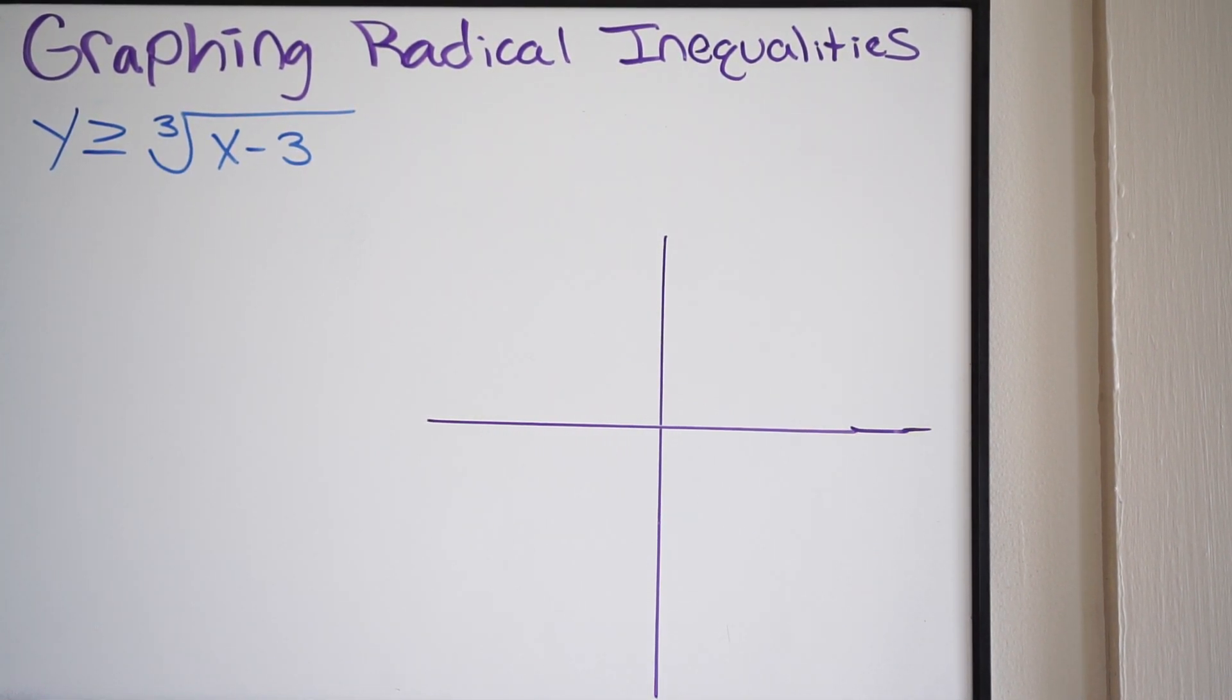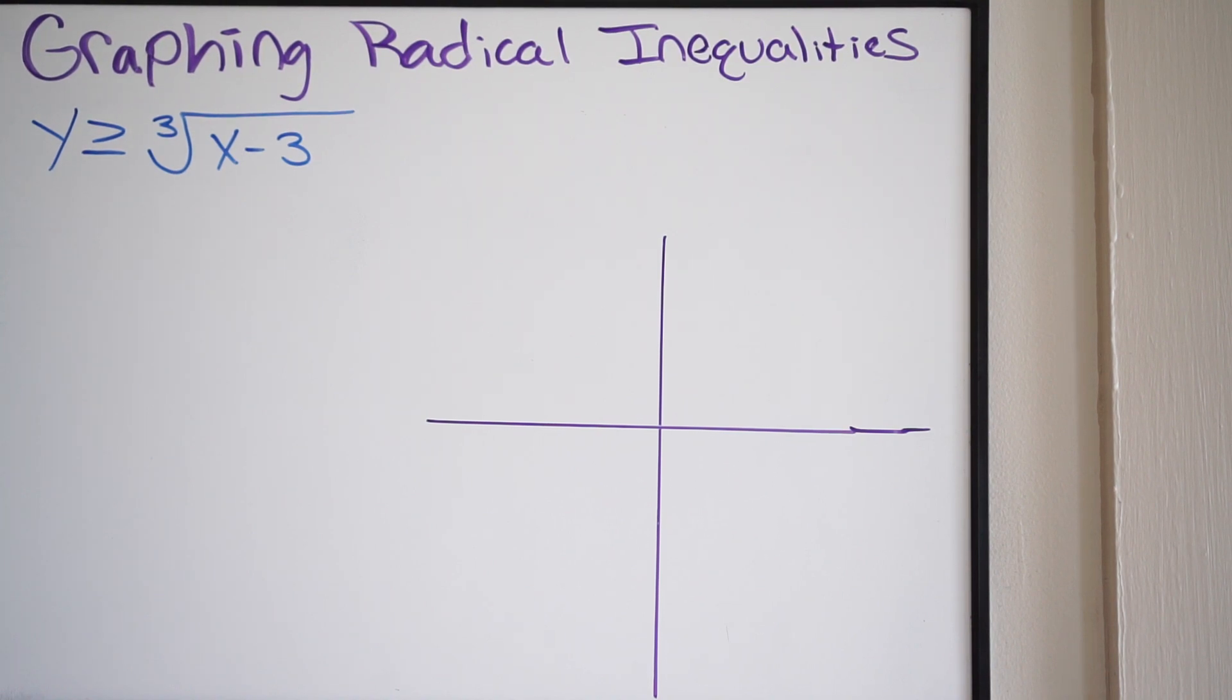Alright guys, so here we have another problem with graphing radical inequalities. So it's a bit different than the last two problems that we did, whereas this is a cubed root, and those other two examples, they were square root. However, we're still going to follow the same process, so let's get into this.